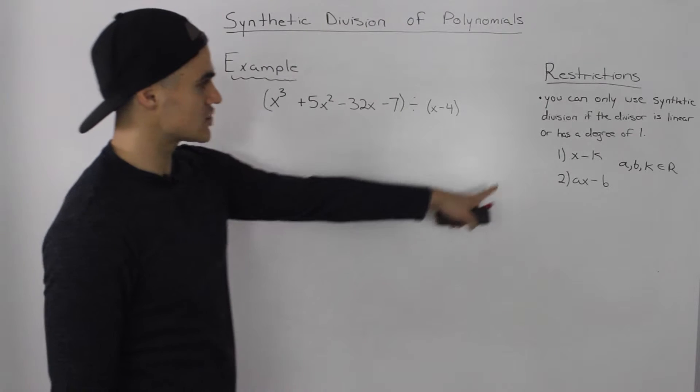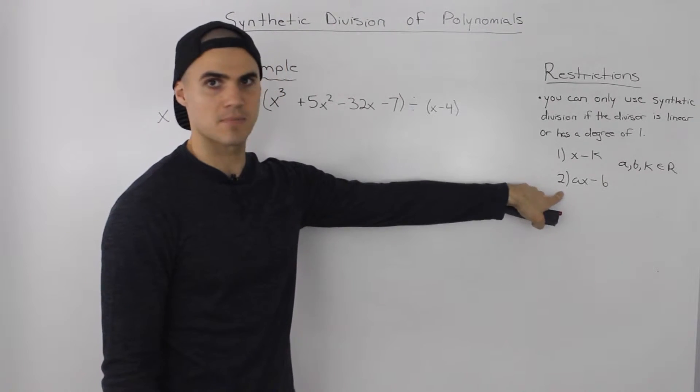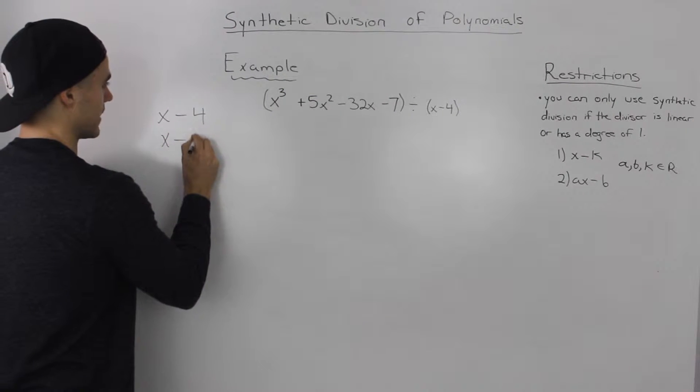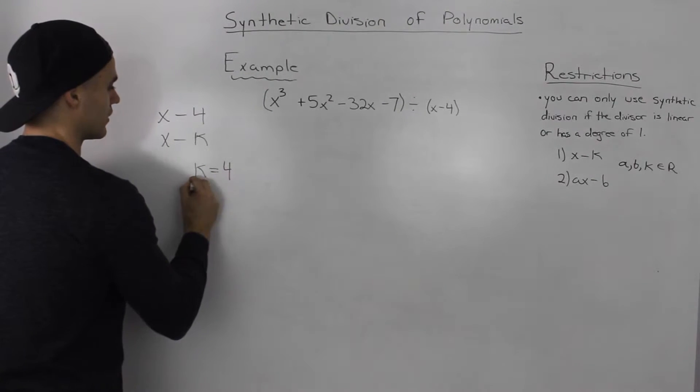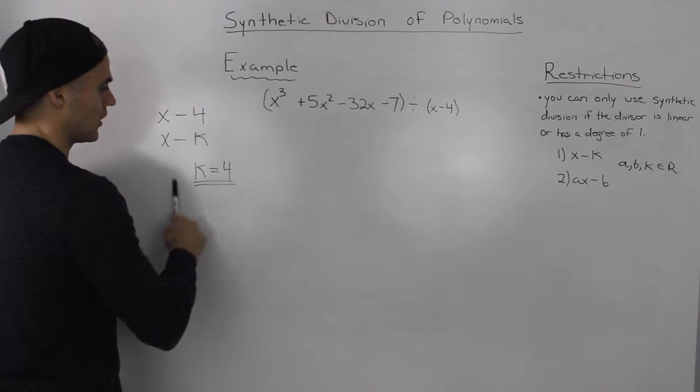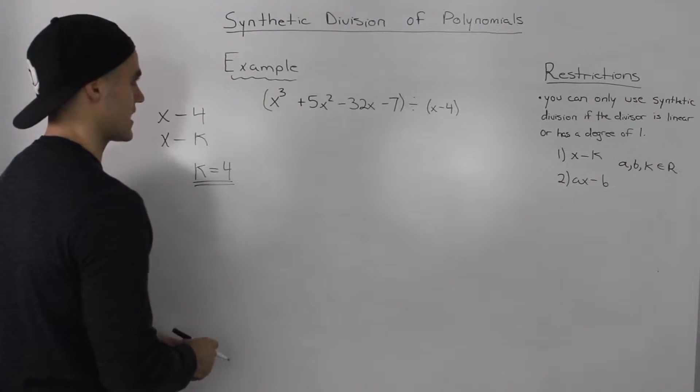And the next thing to check is, does it hold one of these forms? Is it X minus K or AX minus B? Well, it holds the form X minus K. It's the same form where the K value is 4. So with synthetic division, you always have to know what your K value is because you're going to be using it as I'll show you in a sec.